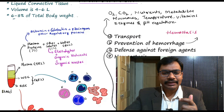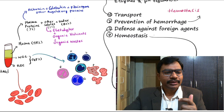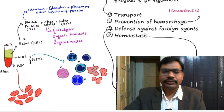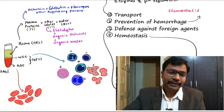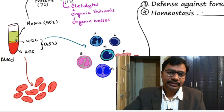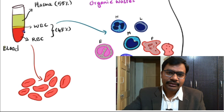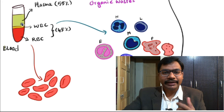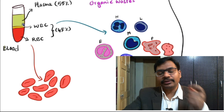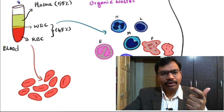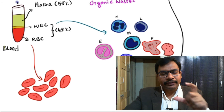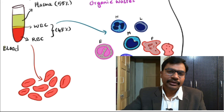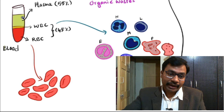Blood is liquid connective tissue. Let us see the details of the blood picture and how it looks. Blood color is red, but when you take blood into a container — a test tube or any vessel — and keep it for some time with anticoagulant, the blood gets separated into three parts.